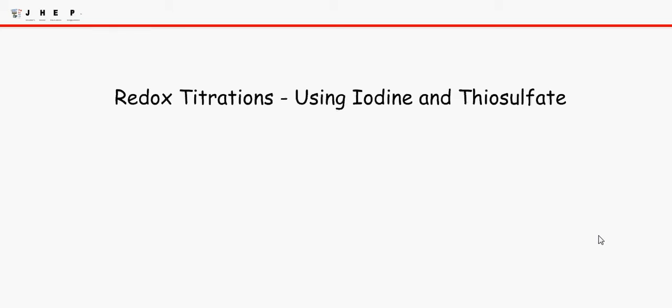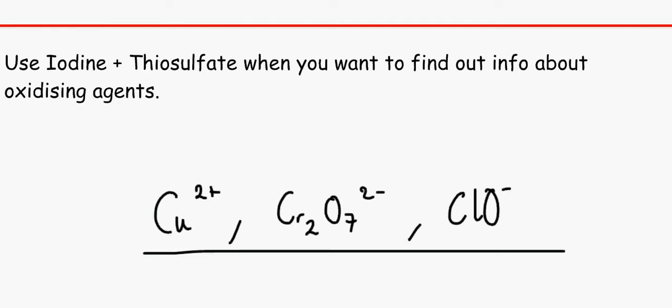Hello and welcome to J-Heb's lesson on redox titrations using iodine and thiosulfate. The first thing you've got to know about it is that we use it when we want to find out information about oxidizing agents. Usually we would use oxidizing agents to find out properties about the reducing agents, but instead of using the reverse of that we can use iodine and thiosulfate instead.